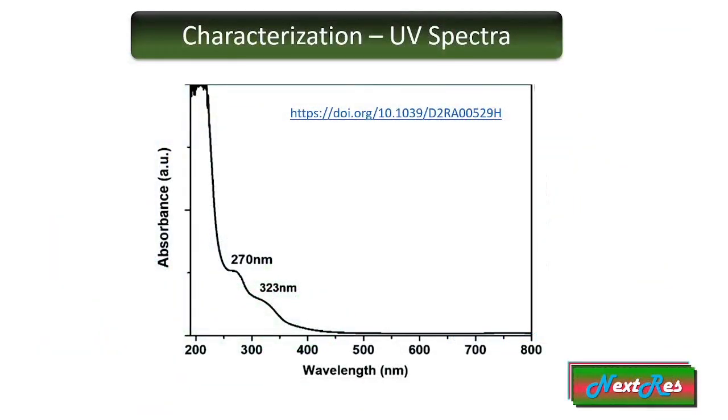So what are the basic characterizations that a researcher has to perform in carbon quantum dot research? Firstly, one has to measure the UV spectra using a UV-based spectrophotometer. Generally, the UV spectra of carbon quantum dots consists of two humps near the UV region.